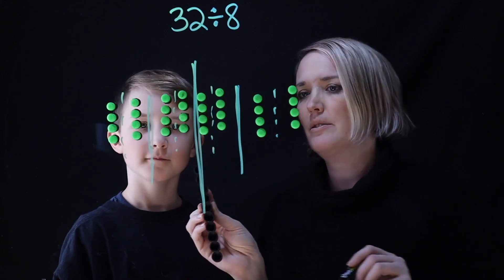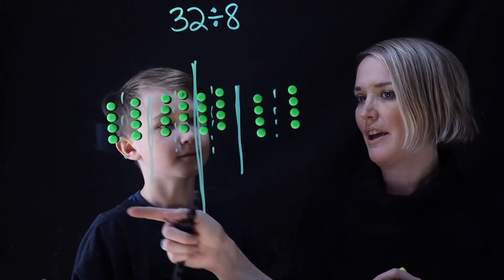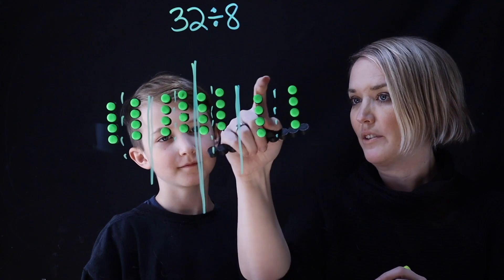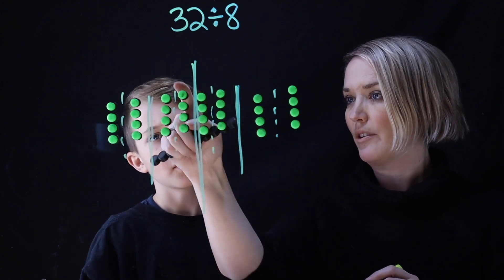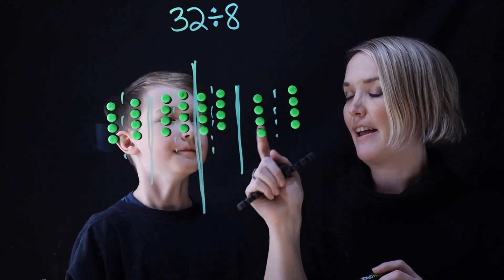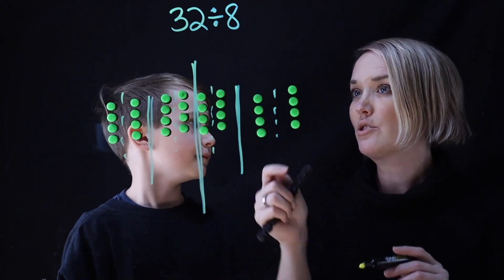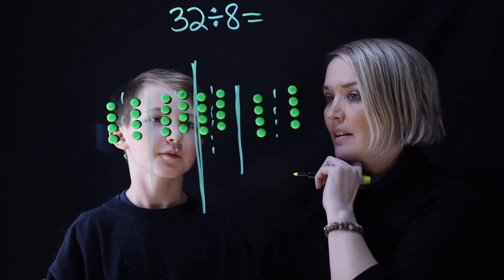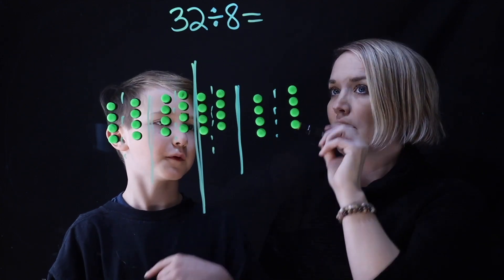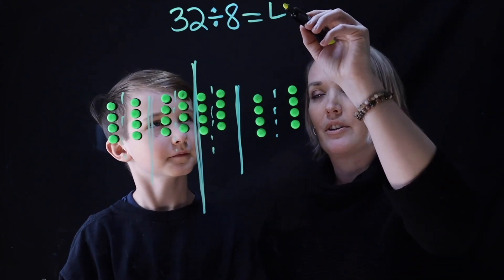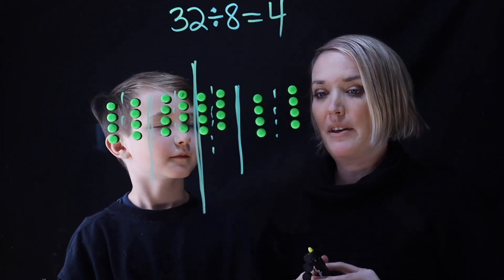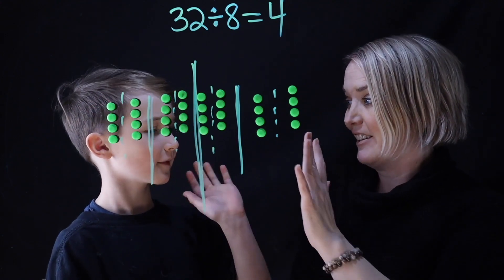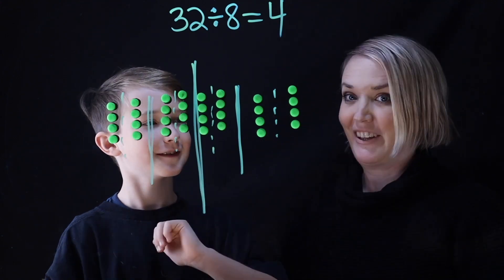So you split 32 into 8 equal groups: 1, 2, 3, 4, 5, 6, 7, 8. And in each group there is 4. So 32 divided by 8 equals 4. That's a pretty good trick — that's a good way of doing it. Bye.